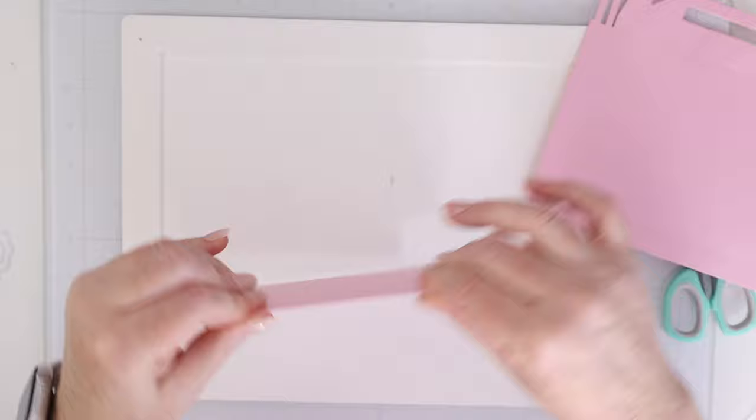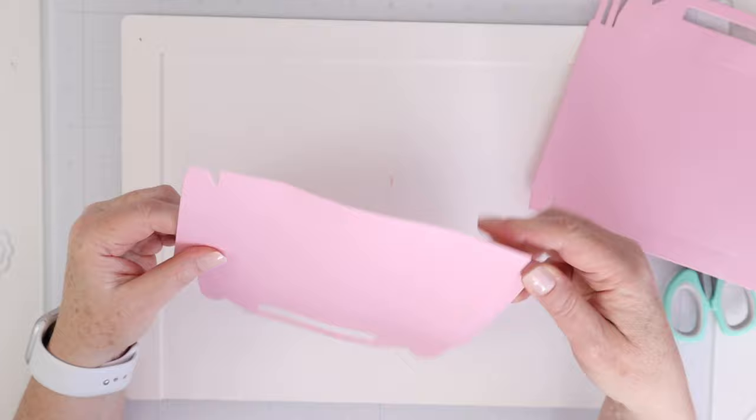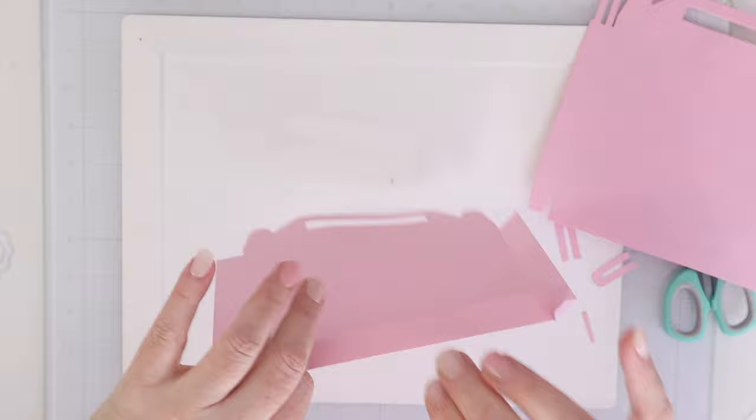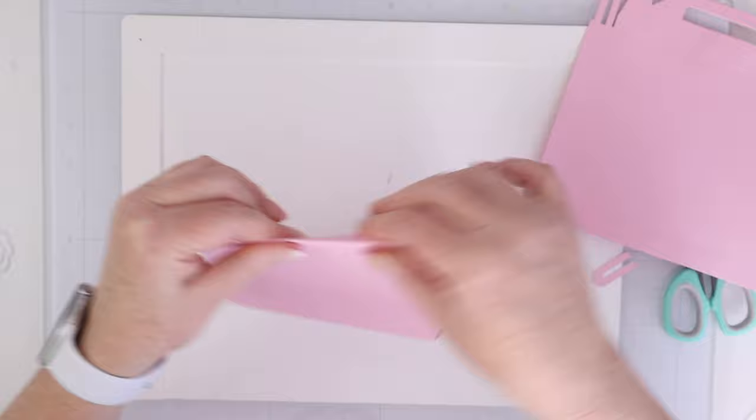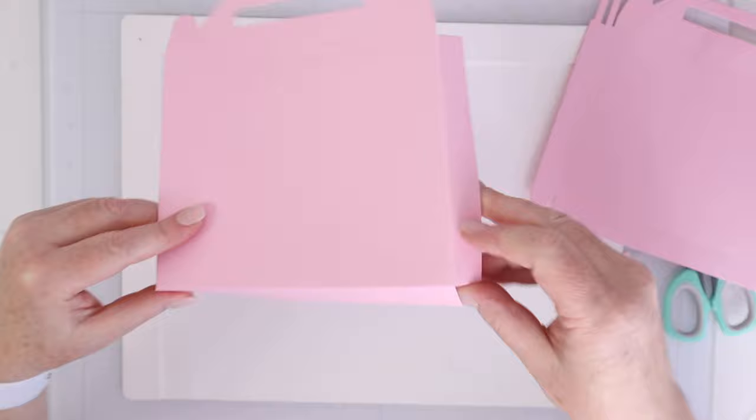Okay, so we're going to use those score lines again, and fold them into the inside of the box. But visually, it makes sense to me to fold it into the inside of the box. And once you have all your score lines folded, you can see how the box is going to come together.